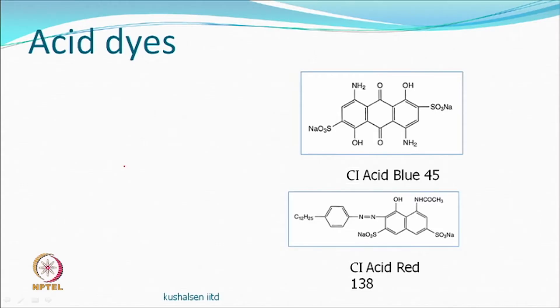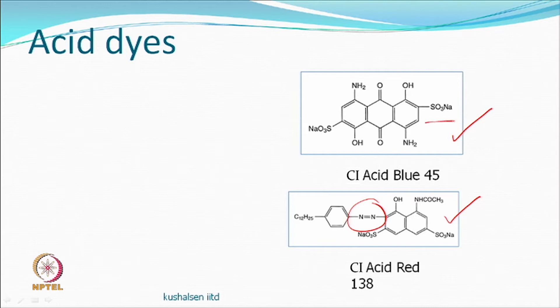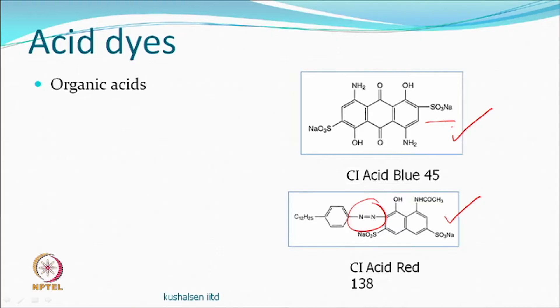Acid dyes — common ones are anthraquinone-based and azo-based dyes. They have solubilizing groups and are anionic in nature — direct dyes are also anionic. Sometimes people ask what is the difference between direct dyes and acid dyes — both are anionic. The fibres used for acid dyes — wool, silk, nylon — will assume a positive charge in acidic conditions, so anything negatively charged will be attracted, and ionic bonds form.